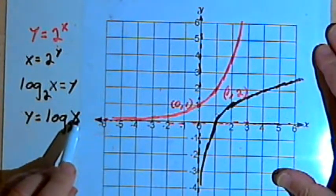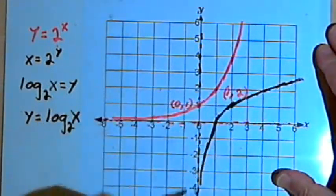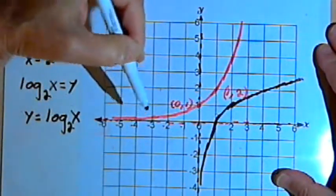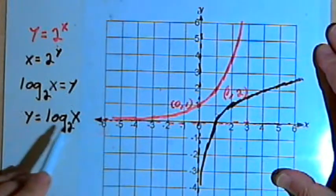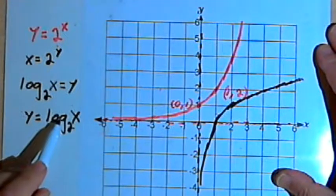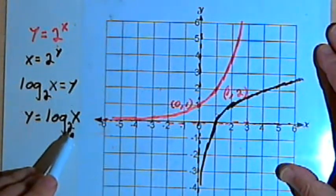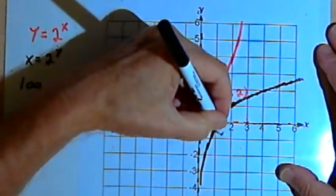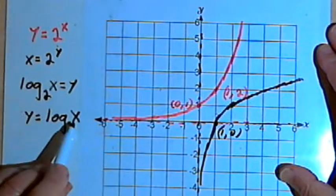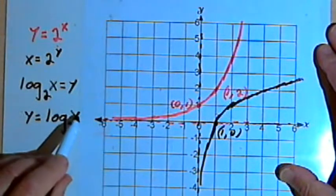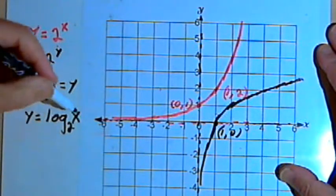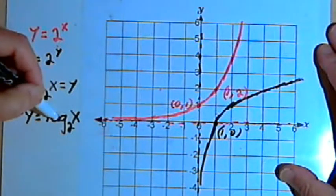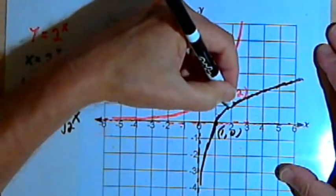Now I want to take some values for x and make sure that we're finding them on the inverted graph of the original exponential function. When x is 1, log base 2 of 1 — like the log base anything of 1 — is going to be 0. So I should have a point at 1, 0, which I have right here. When x is 2, I'm going to have log base 2 of 2. Whenever the base and the number are the same, the logarithm equals 1. So I should have a point at 2, 1, which is right here.